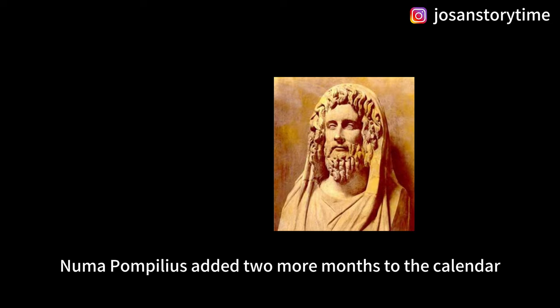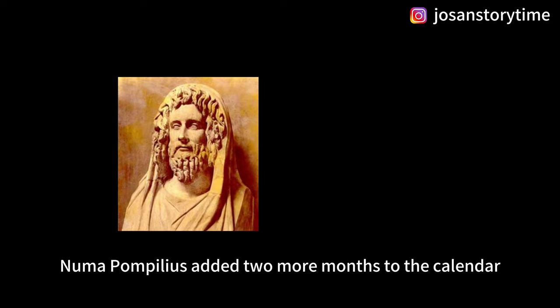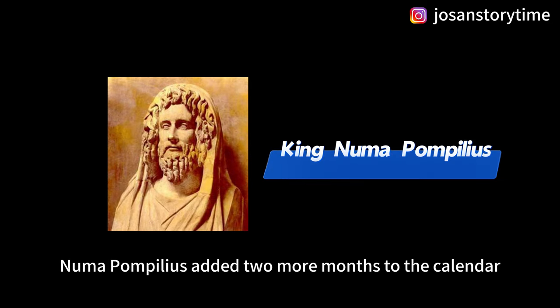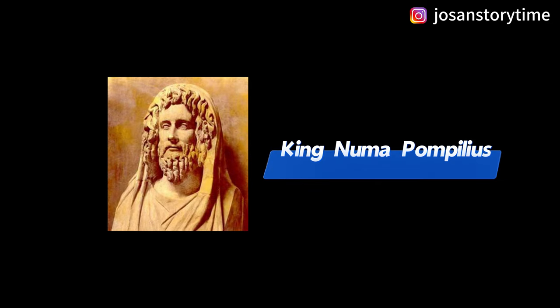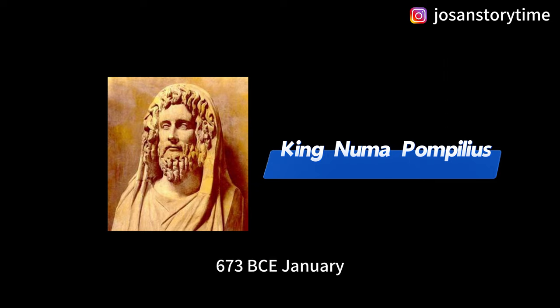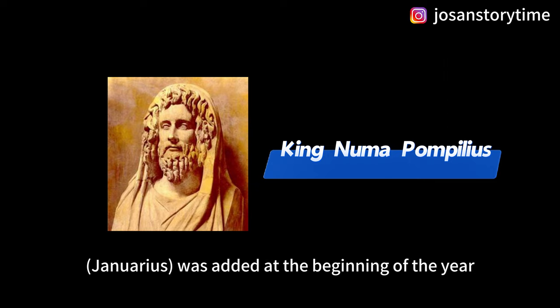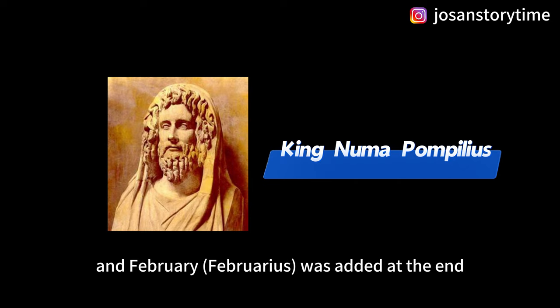According to Roman tradition, King Numa Pompilius added two more months to the calendar around 713–673 BCE. January — Januarius — was added at the beginning of the year, and February — Februarius — was added at the end.